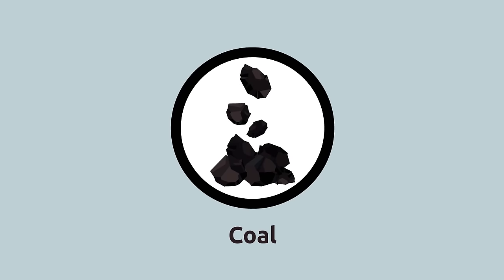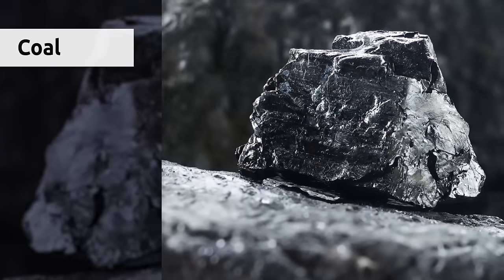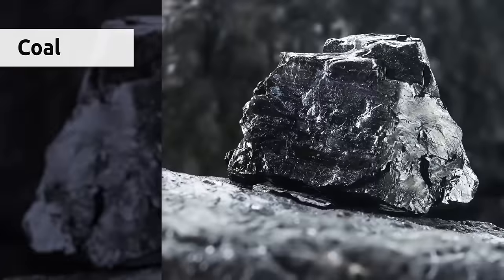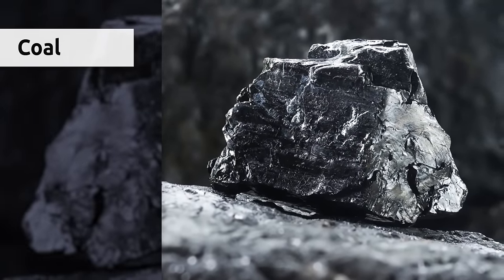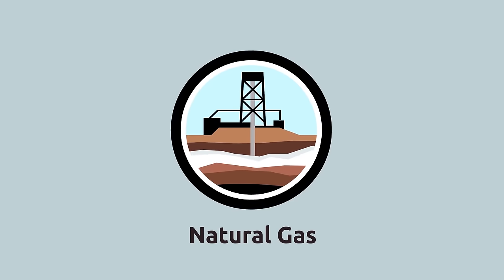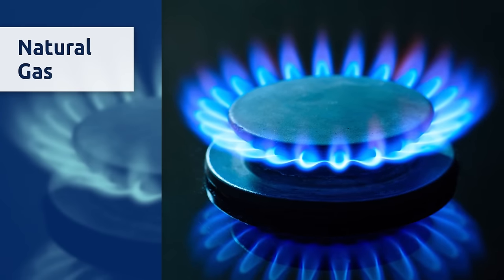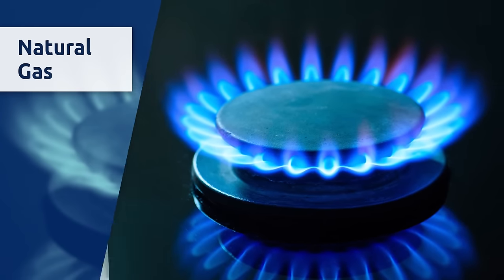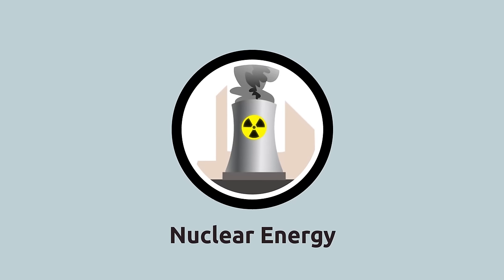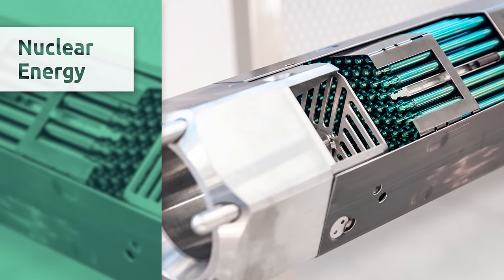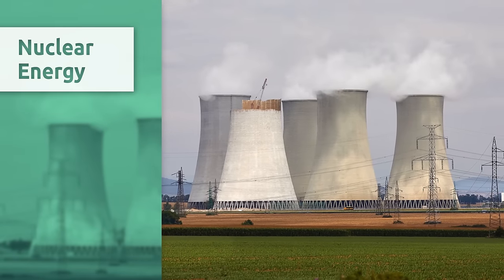Coal is a rock extracted from open-pit underground mines — it's a black substance formed by the fossilization of the dead remains of plants. When coal is burned, it produces heat. Natural gas is extracted from deposits found under the ground and is used to heat houses. Uranium is a chemical element extracted from underground shafts and mines; we use uranium to produce nuclear energy, which in turn transforms into electric energy.